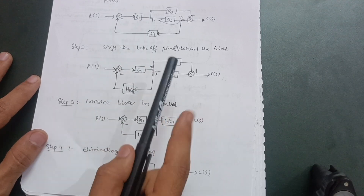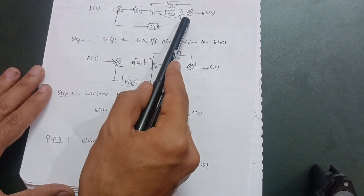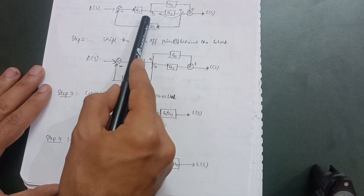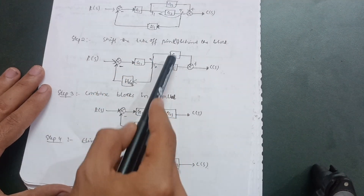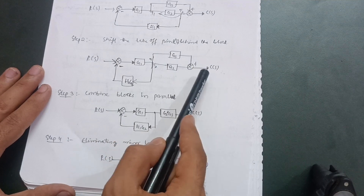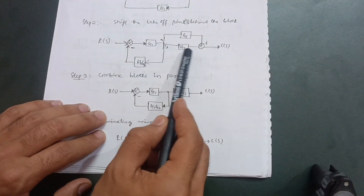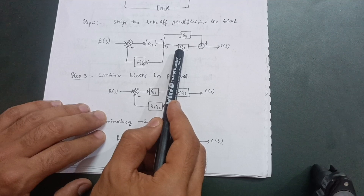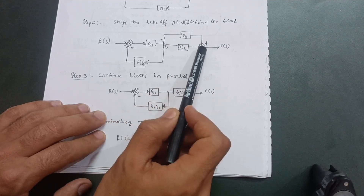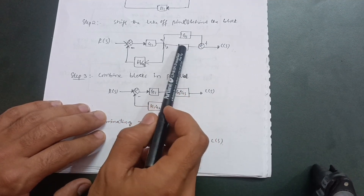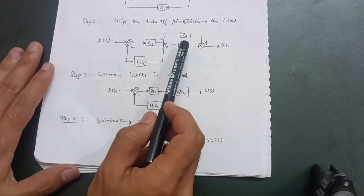So one move has been taken: shifting the takeoff point T2 behind the block. Here is T2 now, this is T1, G3, G2 — the rest of the diagram is the same. Now observing this diagram, there is one takeoff point and one summing point, so these two blocks can now be said to be in parallel and can be easily combined.